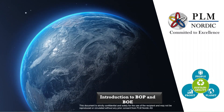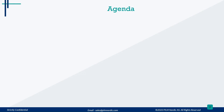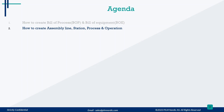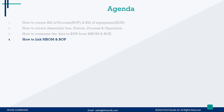Hello everyone. In this video we are going to explain about BOP and BOE. The topics we are going to learn are: how to create Bill of Process (BOP) and Bill of Equipment (BOE), how to create assembly line, station, process and operation, how to consume the data to BOP from MBOM and BOE, how to link MBOM and BOP, and how to link BOP and BOE. These are all the topics we are going to cover in this video.